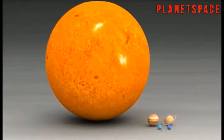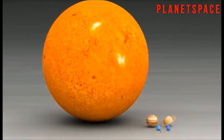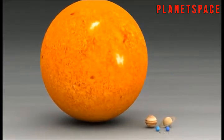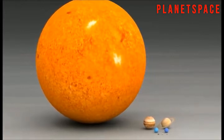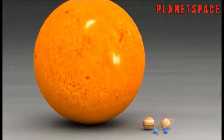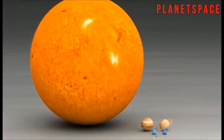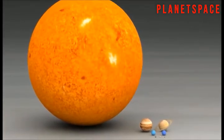In fact, the sun makes up more than 99% of the mass in the solar system. If you put all of the planets, moons, asteroids, comets, and everything else in the solar system together, they would make up less than one quarter of a percent of it.